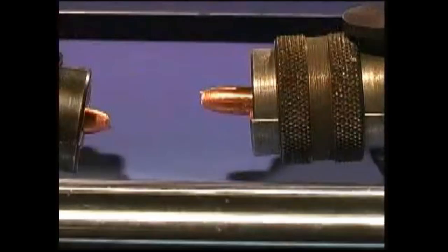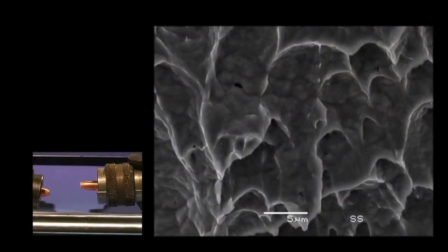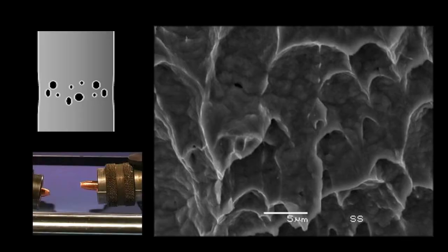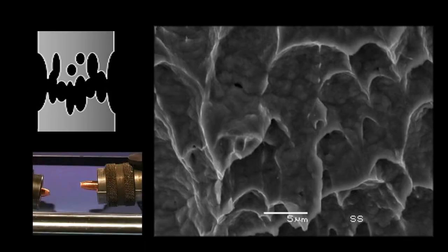Now you might ask, what about those voids? How do we know they're the reason for failure? Well, one way we know is by looking closely at the fractured surface. The surface has many dimples, which is a sign that voids have grown and linked together.